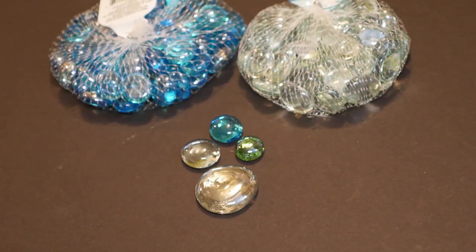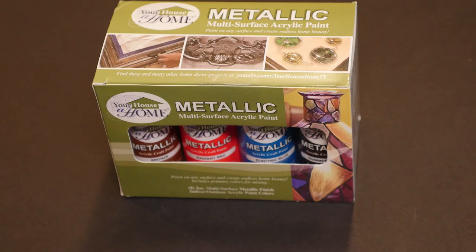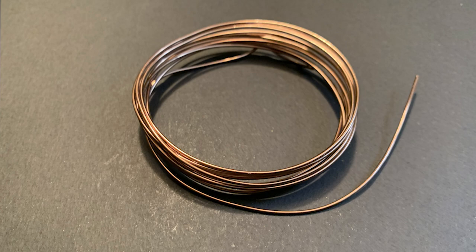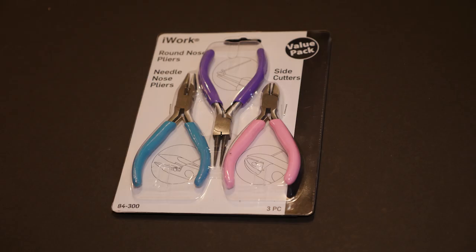For this piece I'll be using a large glass Dollar Tree gem, metallic acrylic paint, bronze color copper wire 18 gauge, and a set of jewelry making tools: round nose pliers, needle nose pliers, and side cutters. You can get these from Walmart or any craft store.